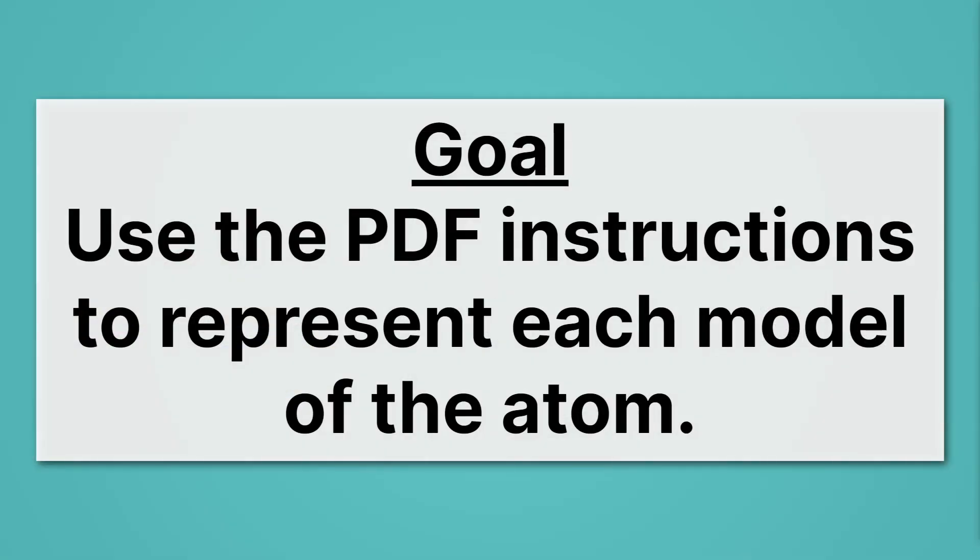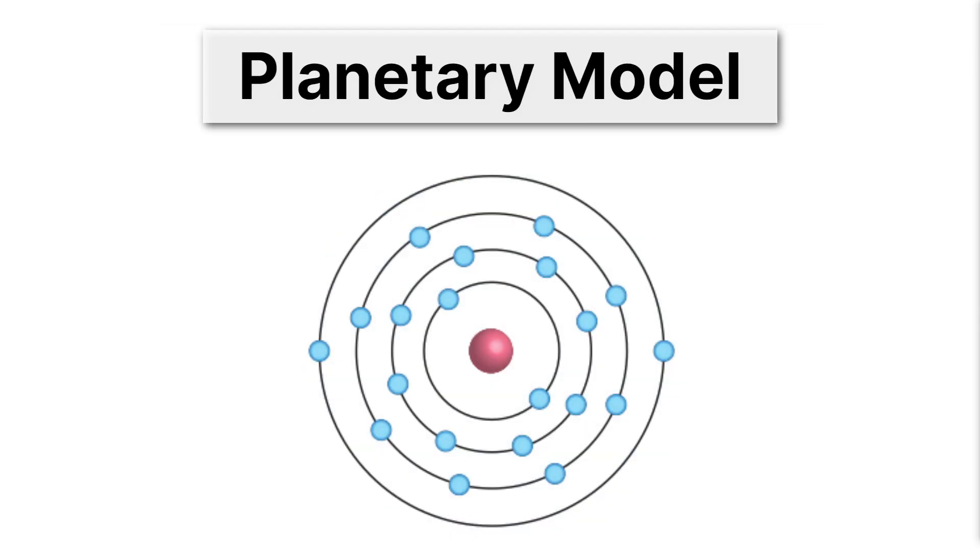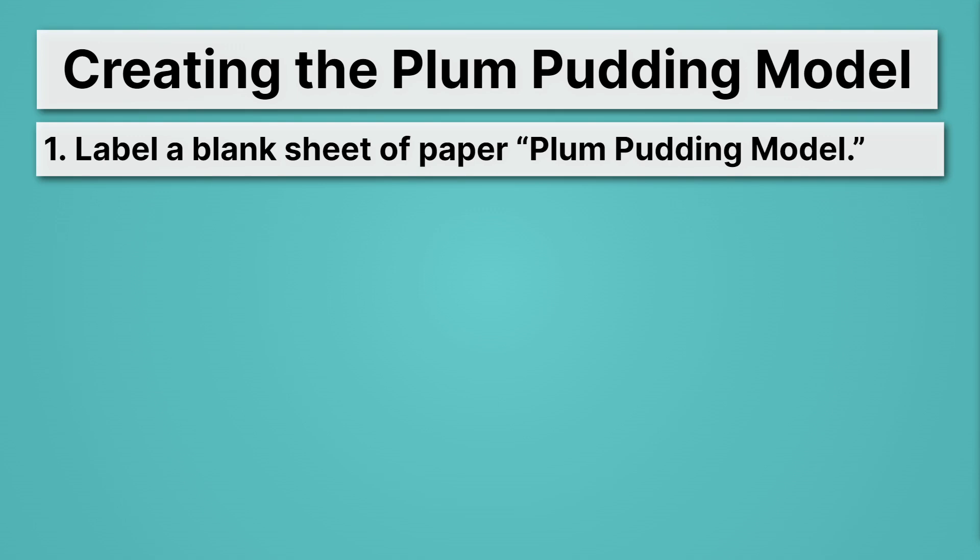So remember, your goal is to use the PDF instructions to represent each model of the atom. You're going to build Dalton's model, the plum pudding model, the planetary model, and the quantum model. Let's go through the process in detail for the plum pudding model.